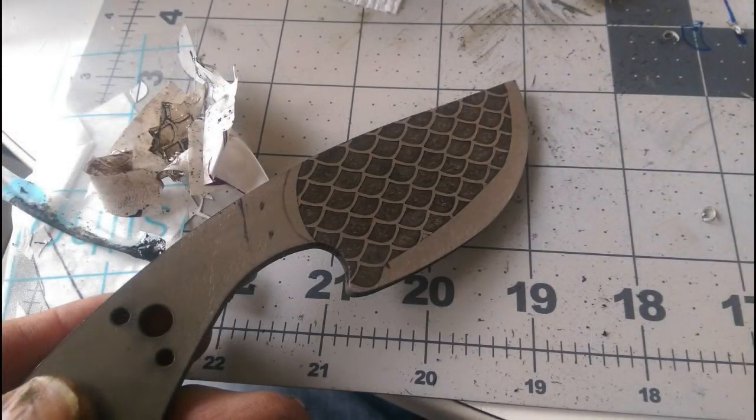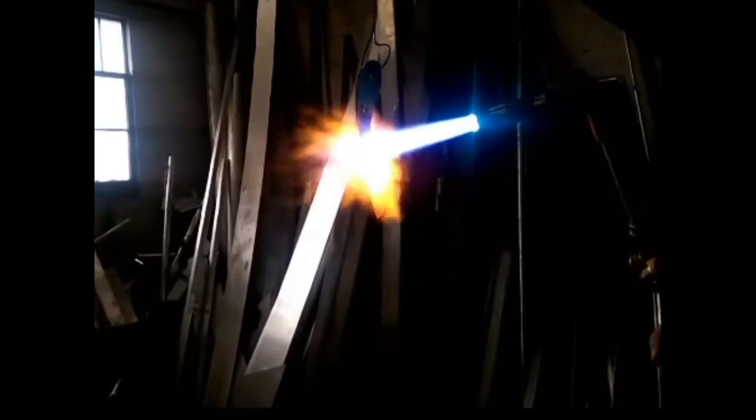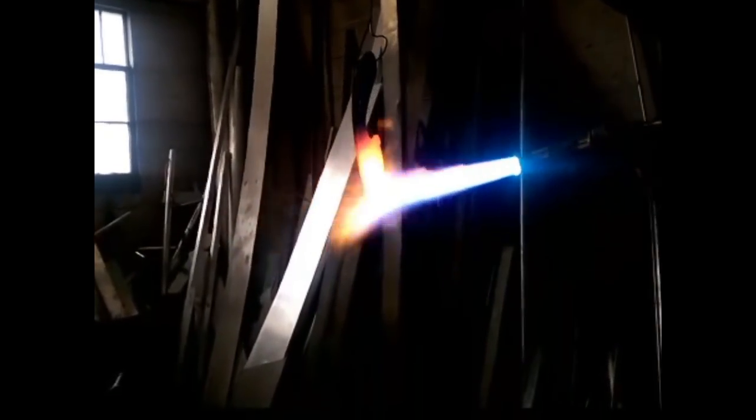I left the electro etching in place for a long time, a minute or so on each spot so that it would be very deep and the etching would survive the heat treating and tempering and the cleanup after.